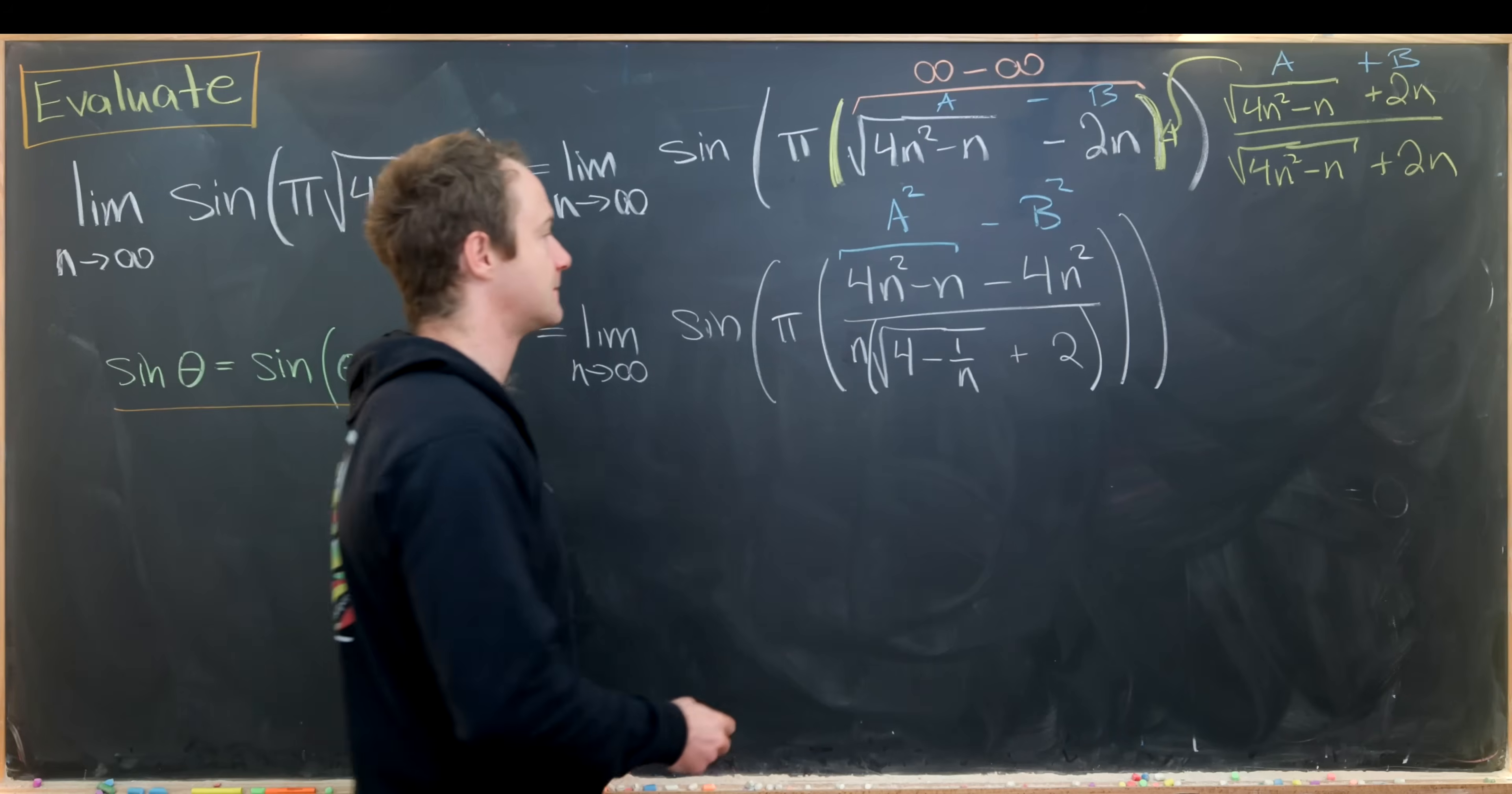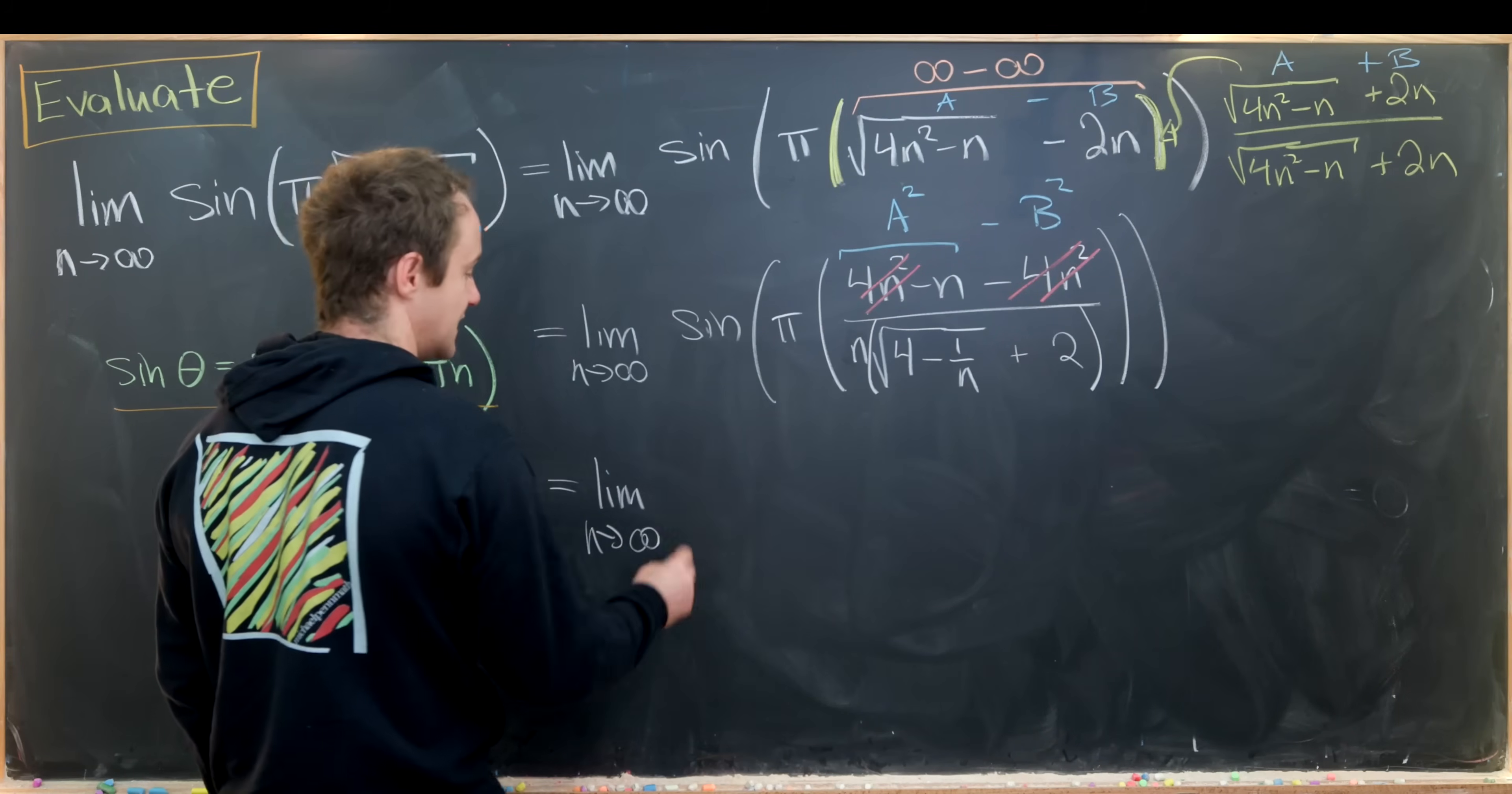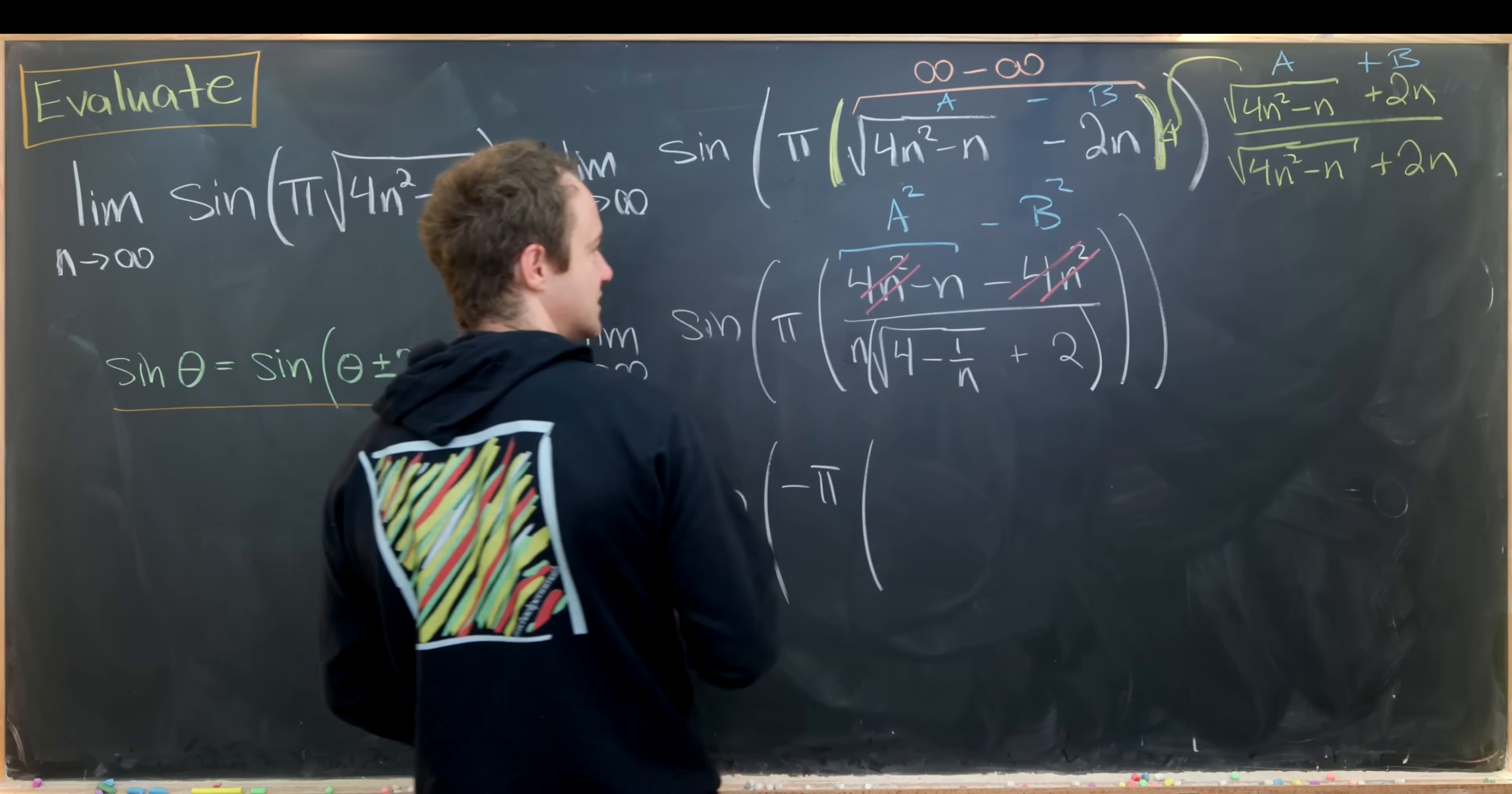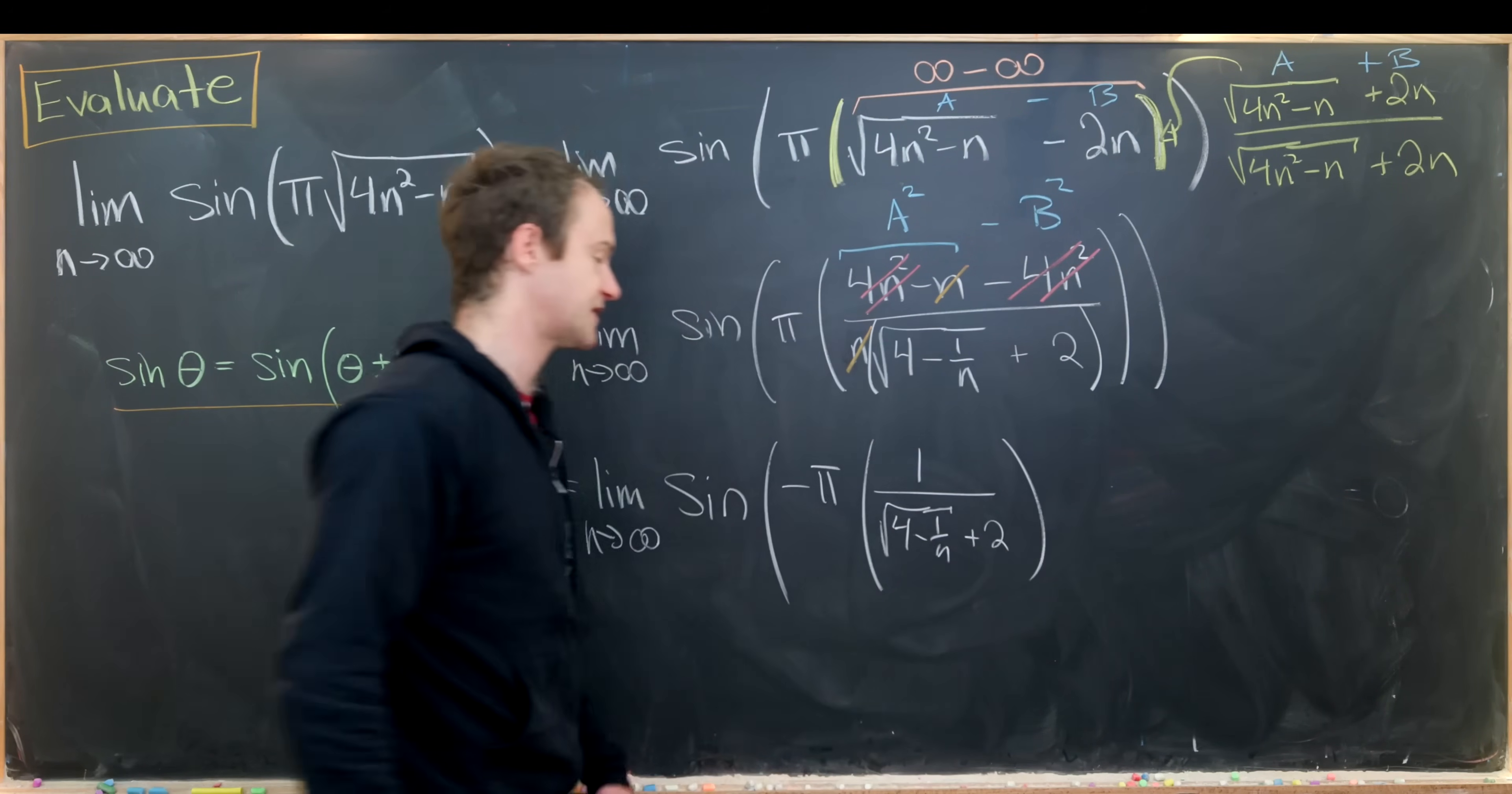So let's notice this 4n squared and this 4n squared cancel. I can bring my minus sign out. This leaves me with the limit as n approaches infinity of the sine of minus pi times. Now again I'll do one more simplification. This n and this n cancel down to a 1. And then I'll have n over the square root of 4 minus 1 over n plus 2.